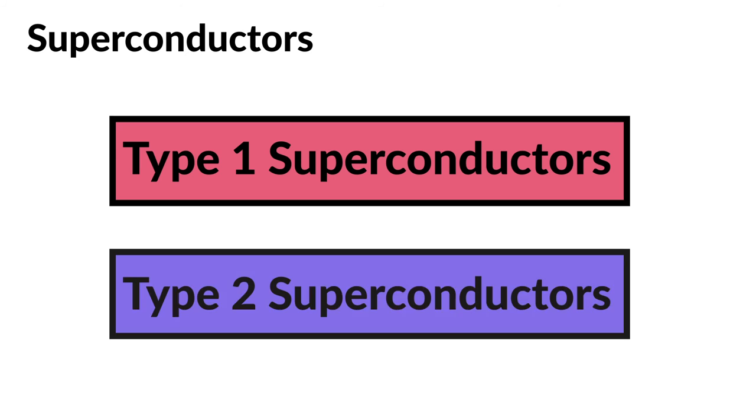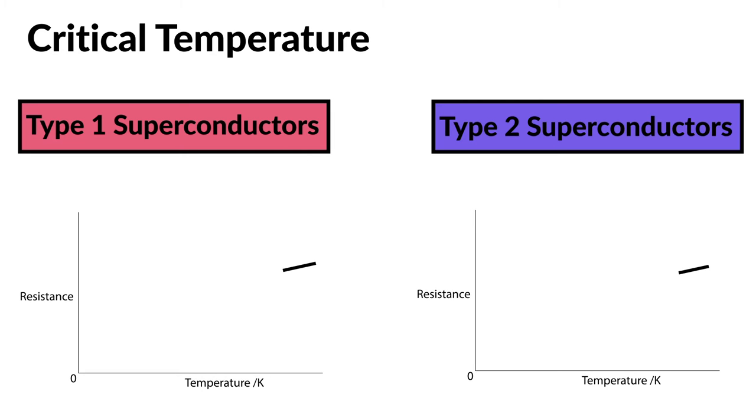Superconductors are generally split into two categories, type 1 and type 2, and there are two primary differences between these two types. The first is the critical temperature. Superconductors only exhibit their special properties when below a certain temperature, called a critical temperature.